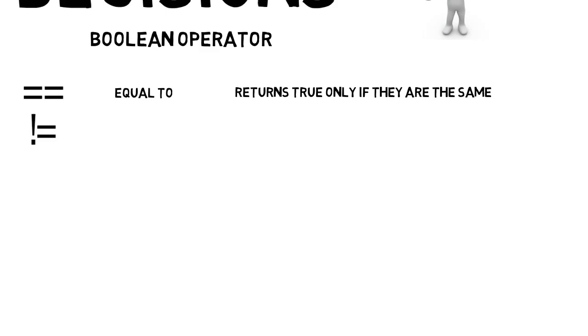Exclamation mark equals means not equal to. This is the exact opposite of two equal signs. This will return true only if the variables are not the same.